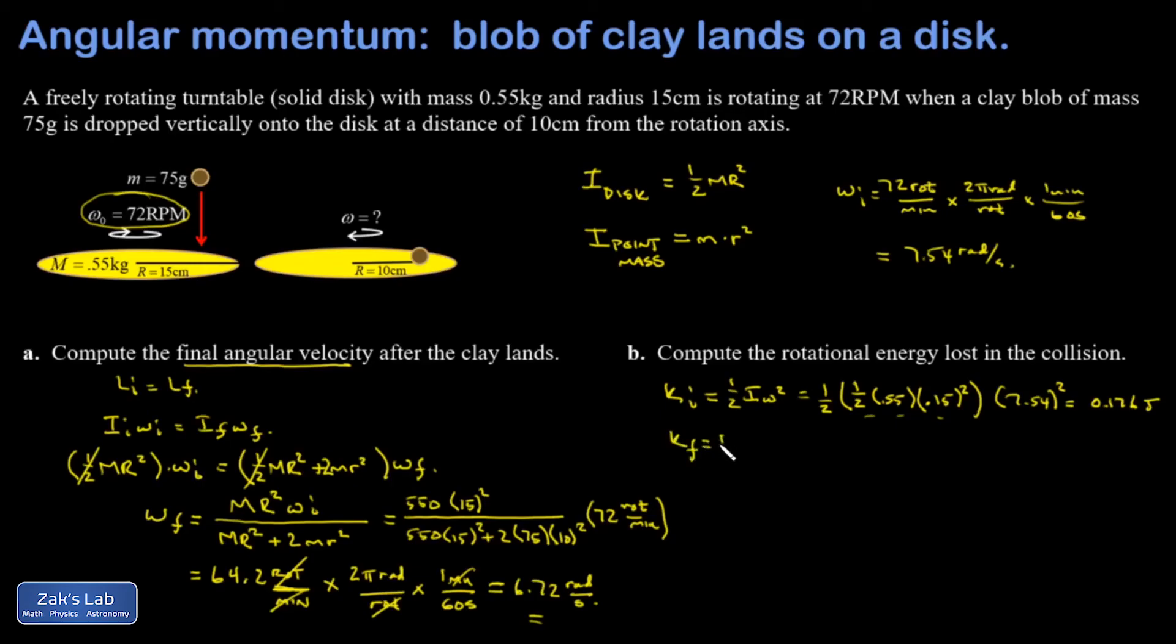The final kinetic energy is going to be one-half I omega squared for the final state. But my I is not simple now. It has two different pieces. It has the one-half times M times R squared for the disk, plus the little mR squared for the point mass. So that's 0.075 kilograms for that point mass times the distance to the rotation axis, that's 0.1 meters squared. So there's my mR squared. Multiply all of that by 6.72 radians per second, all squared. And I get 0.157 joules.